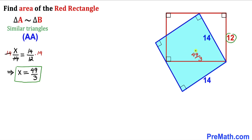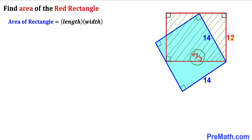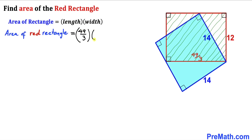The sides of the red rectangle are 12 cm and 49/3 cm. For the final step, let's calculate the area using the rectangle formula: Area = length × width. In our case, length = 49/3 and width = 12, so the area equals 49/3 times 12.